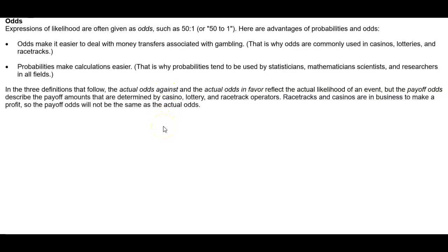In the three definitions that follow, the actual odds against and the actual odds in favor reflect the actual likelihood of an event. But the payoff odds describe the payoff amounts that are determined by casino, lottery, and racetrack operators. Racetracks and casinos are in business to make a profit, so the payoff odds will not be the same as the actual odds.